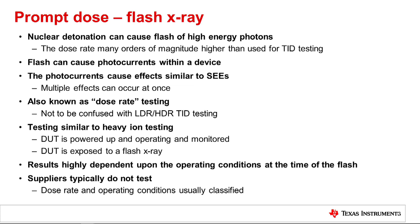A nuclear detonation can cause a flash of high-energy photons at dose rates many orders of magnitude higher than TID testing. This flash can cause photocurrents to occur within the device, causing effects very similar to single event effects, but multiple effects can occur at once. Prompt dose testing is also known as dose rate testing, but should not be confused with low dose rate or high dose rate TID testing. To do the testing, the DUT is powered up and operating, then exposed to a flash x-ray. Results are highly dependent on operating conditions at the time of the flash and the dose rate. Suppliers do not typically do prompt dose testing because the dose rate and operating conditions are usually classified.